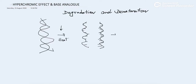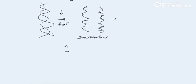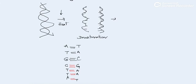Such a process is known as denaturation. We can explain it with an example: suppose here is a DNA sequence T-G-C-T-T-A-A and T-A-C-G-A-A-T. We all know A-T has a double bond and G-C has a triple bond. Such a structure can be found in DNA, with base pairs between these two strands.